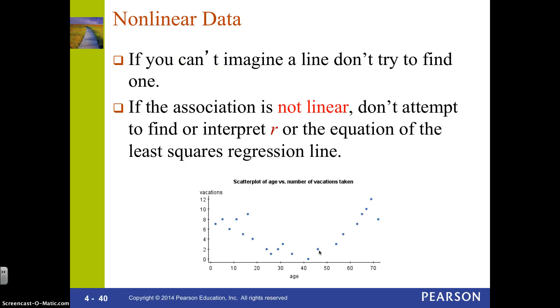First thing is, if you don't see a line when you first look at the data, don't try to find one. If it's not linear, don't attempt to find or interpret the correlation or find the equation of the least squares line. So here's an example of a set of data that is not linear, so we should not do linear regression on this data set.